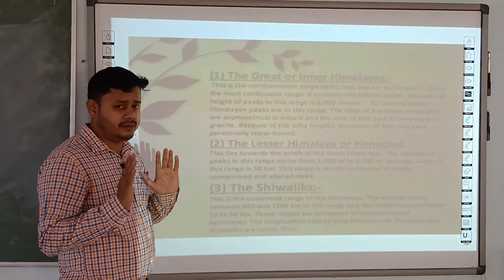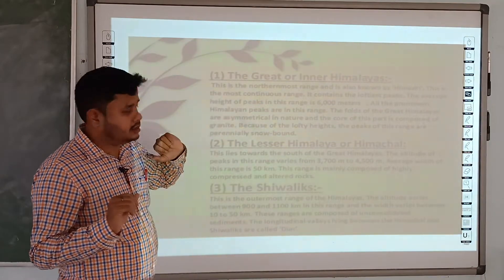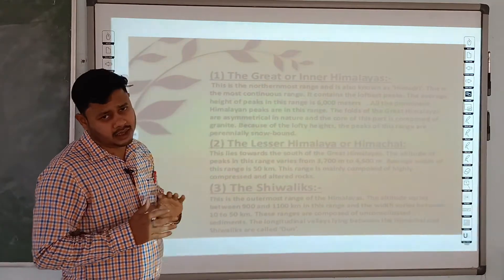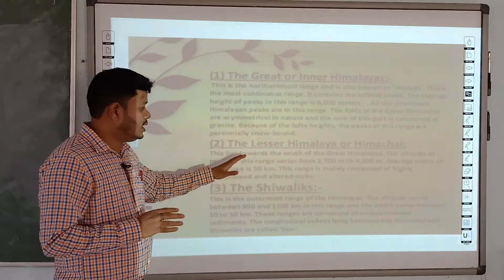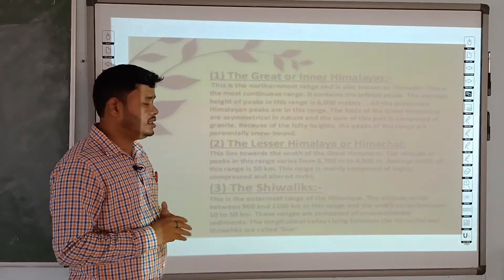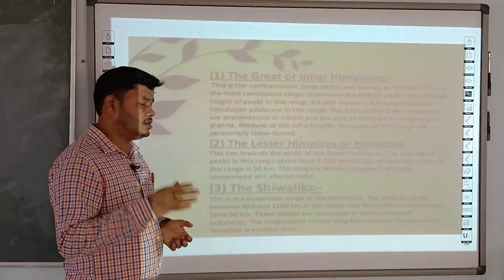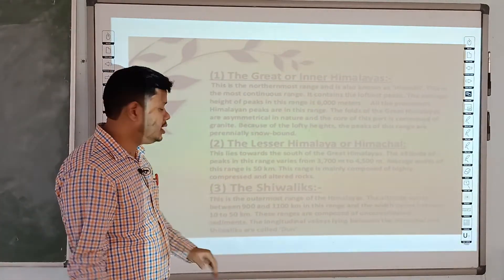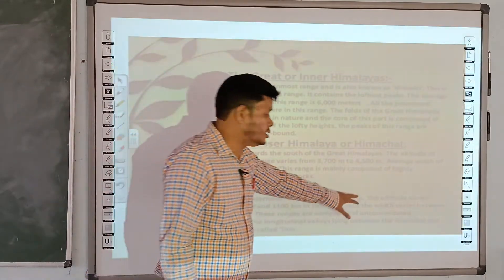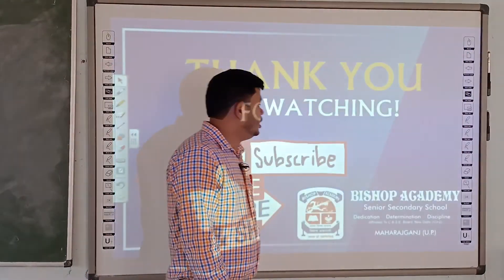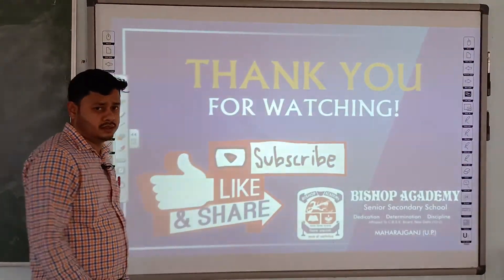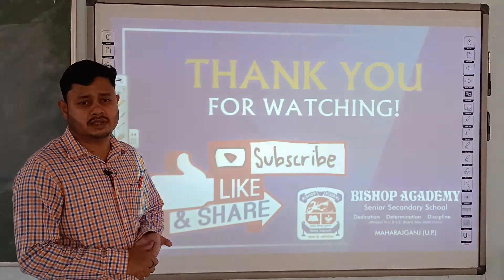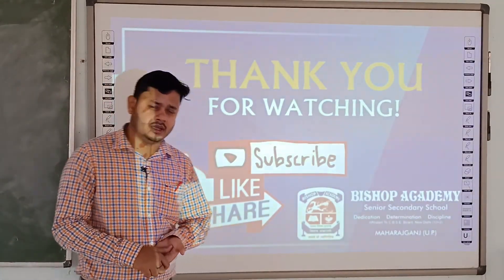So we have three ranges of the Himalayas: Greater Himalaya or Inner Himalaya, whose main feature is the highest peaks; Himachal, known for its hill stations; and Siwalik, the lowest outer range. This is the description of the Himalayan mountains. Next I will come with the next physical feature, that is the Northern Plains. Thank you.